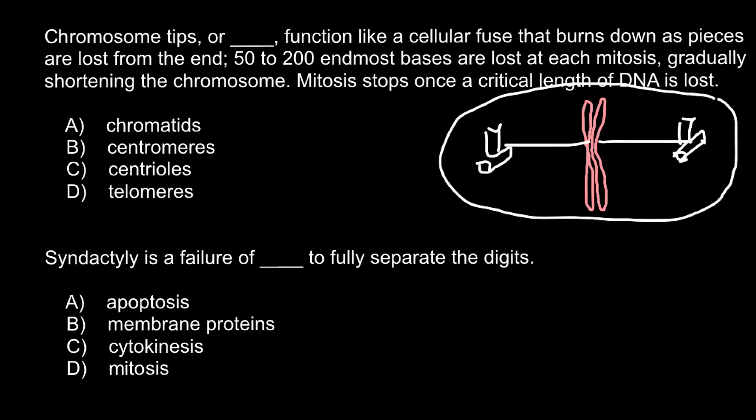It is very easy to mix up these names. Centrioles make the centrosome, which connects to the centromere. The centromere is found on the chromosomes. Chromatids are also easy to confuse with chromosomes and chromatin. Chromatin is just DNA associated with proteins, because most of the mass of a chromosome is made of proteins, not DNA. DNA associates with those proteins to form the compact bodies we see under a light microscope, and this association is also needed for gene expression or gene shutdown.